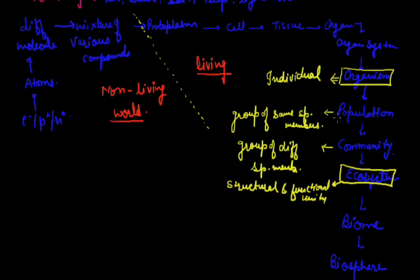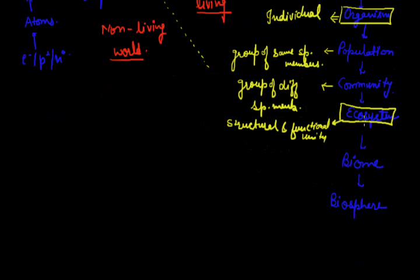The individual makes a group and forms the population later on. And various kinds of species members get collected and form the community. And after that, structural and functional unit is formed, which is made up of biotic as well as of abiotic component, which is called as ecosystem.